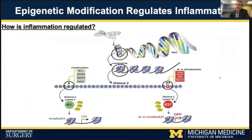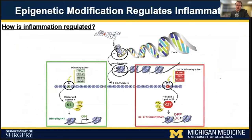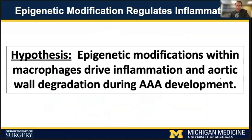One avenue for the regulation of macrophage phenotype is epigenetic modification. Typically, DNA is bound tightly to histones to allow for packaging of the genome. Modifications of these histones, most notably methylation, can lead to either the unwinding of DNA resulting in genes being turned on, or further condensation of DNA resulting in genes being turned off. Given that epigenetic modifications can be regulated by cardiovascular and environmental risk factors, we hypothesized that epigenetic modifications within macrophages drive inflammation and aortic wall degradation during abdominal aneurysm development.